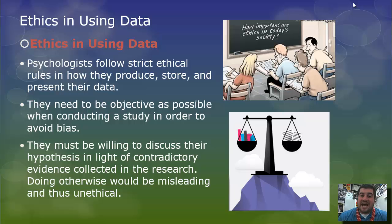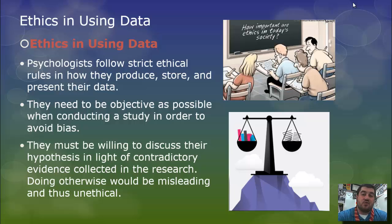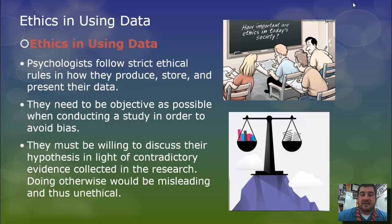Ethics in using data: researchers need to not manipulate the scores. They need to store, produce, and present data in ethical ways. They need to be objective when conducting a study in order to avoid bias. They must also be willing to discuss their hypothesis even if they're wrong. Even if you're wrong, you still publish your work so that other people can see that line of thinking was wrong. Doing otherwise would be misleading and unethical.